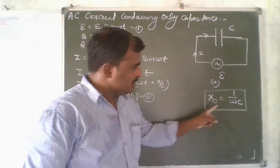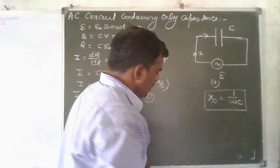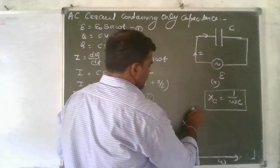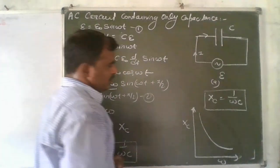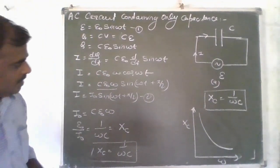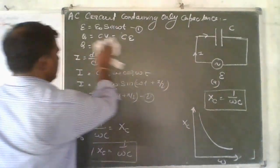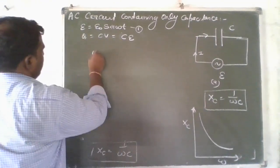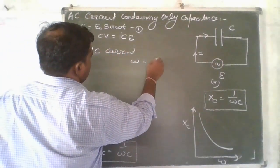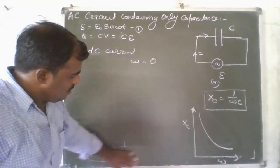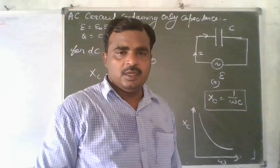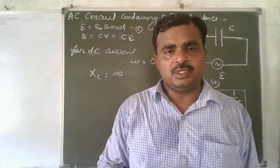XC is inversely proportional to omega. If we plot a graph between XC and omega, it shows that when frequency increases, the reactance produced by the capacitor decreases. For DC current, the frequency of pure DC is zero, so omega equals zero, and therefore XC equals infinite. For DC current, the reactance produced by the capacitor is infinite.